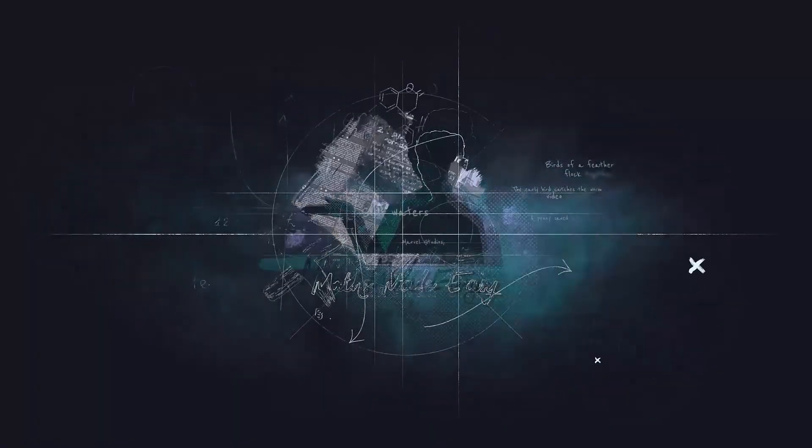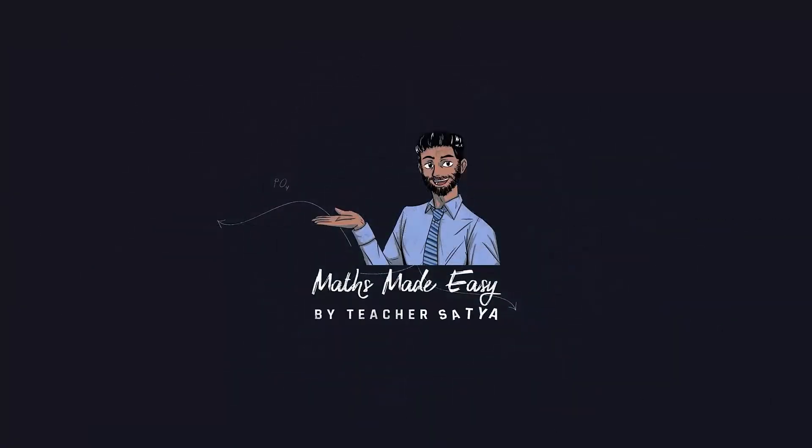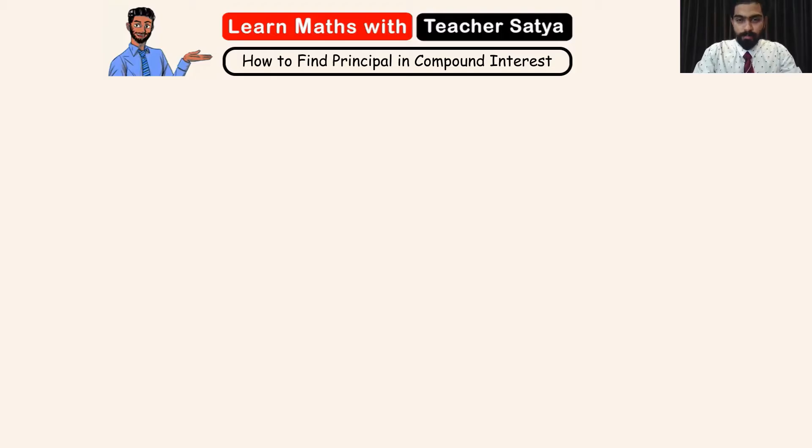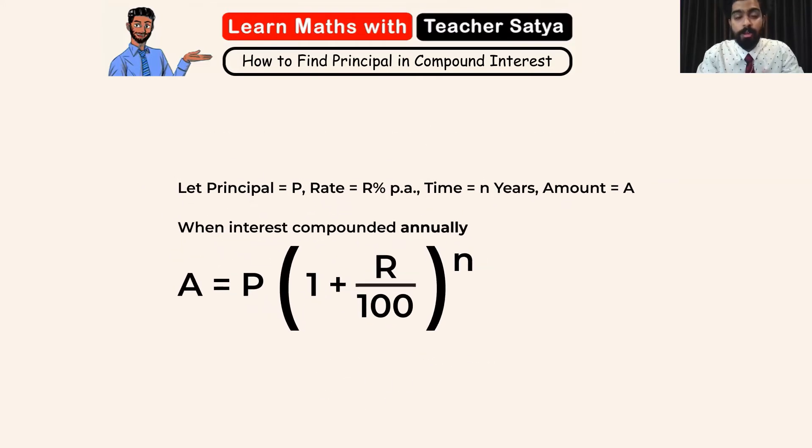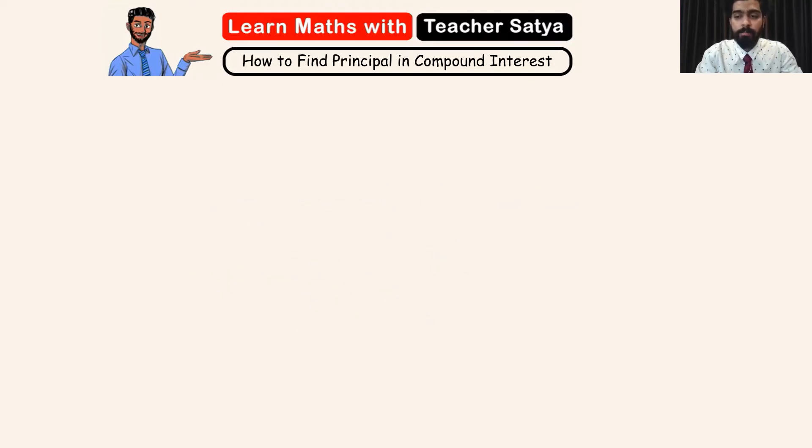Now let's get to it. So in order for us to find the sum of money or the principal, we will be using the amount formula in compound interest, which is A = P(1 + r/100)^n. Now let's take this understanding and solve a question.